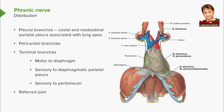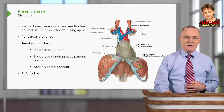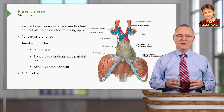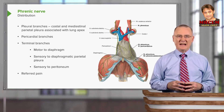This slide depicts the distribution of the phrenic nerve. It has pleural branches supplying the costal and mediastinal parietal pleura associated with each lung apex, as well as pericardial branches to supply the pericardium. The right phrenic gives rise to pericardial branches, and the left phrenic courses along the pericardium with branches visible as well. The terminal branches of the phrenic nerve supply the diaphragm, conveying motor fibers.